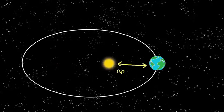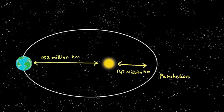What this means is that Earth will be closer to the sun at some point which is called the perihelion and farther at some point which is called the aphelion.